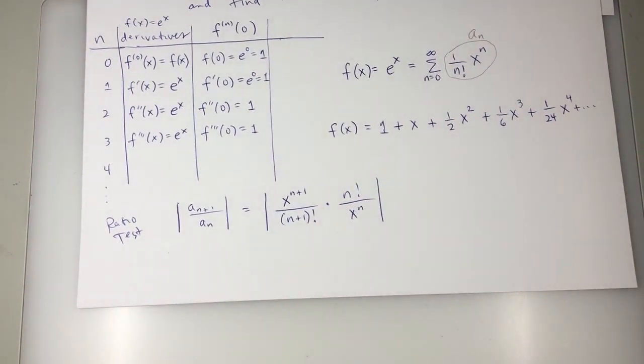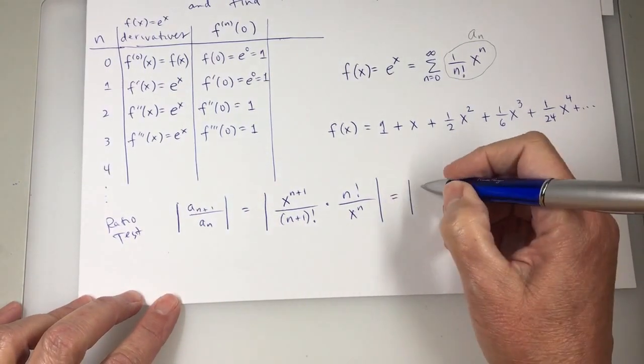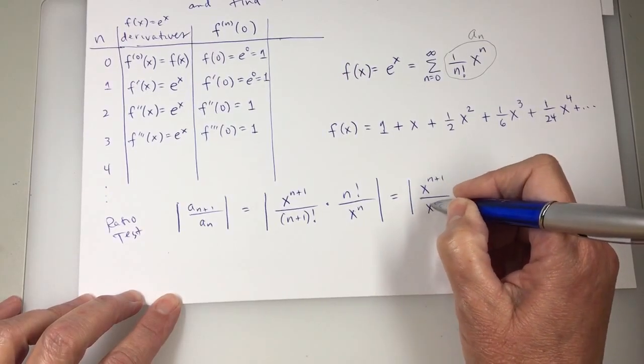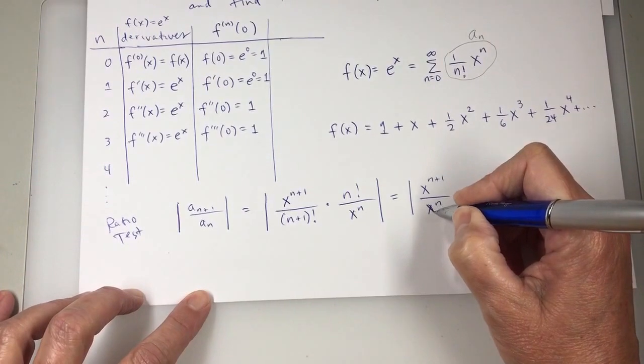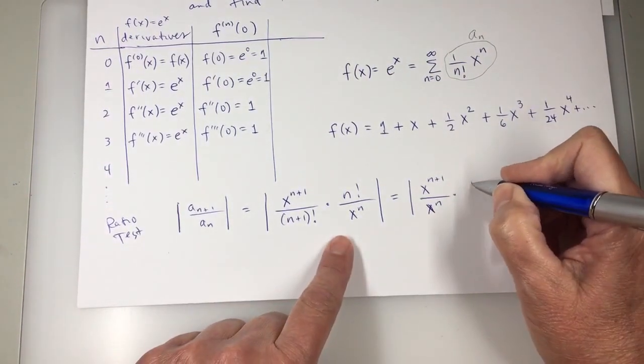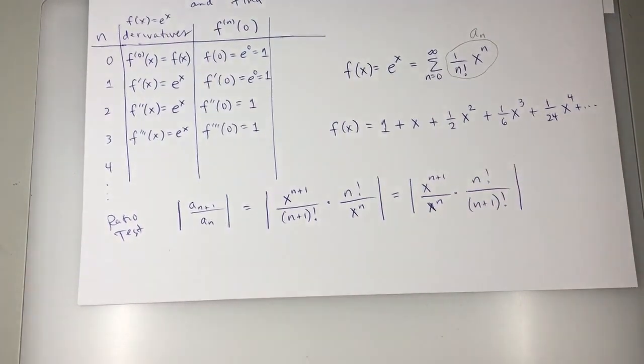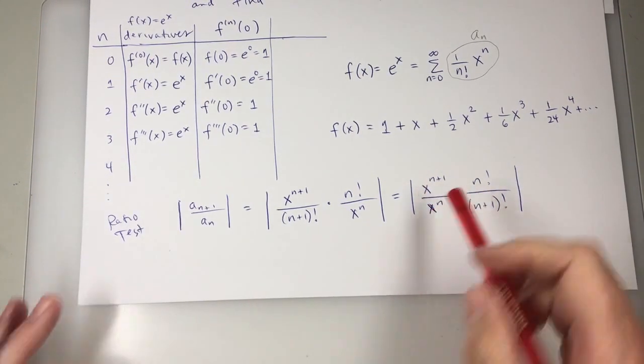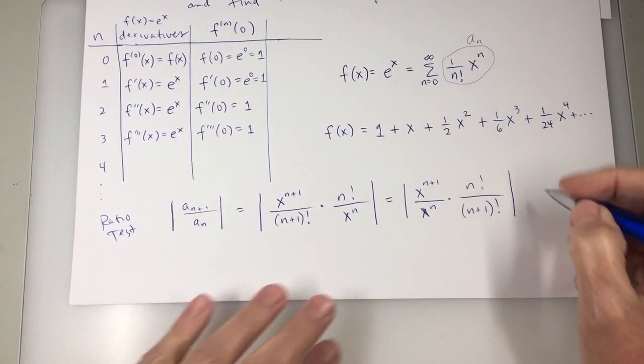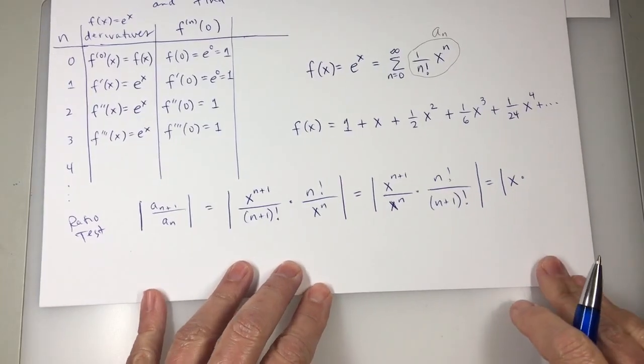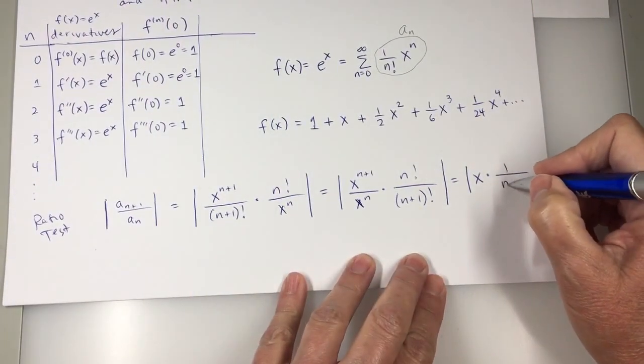So I'm going to start simplifying this using algebra. So I'm going to get the x's together in a fraction numerator denominator times n factorial over n plus 1 factorial. For the x's, I have the same base. I can just subtract the exponents. What are you going to get? x. How about this fraction with the factorials? 1 over n plus 1.